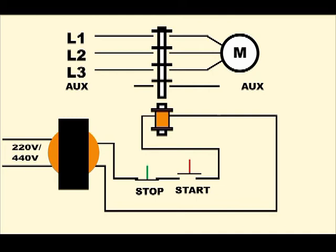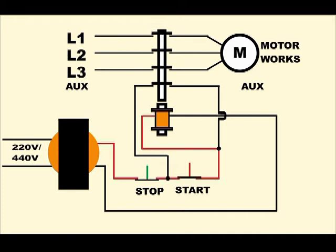All it takes is to connect the auxiliary contact in parallel with the start button to solve this problem. If we now press the start button, the contactor coil will be energized. However, when you release the start button, the auxiliary contact will act as a jumper across the start button terminals. So current keeps flowing and the motor stays on.